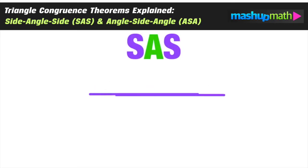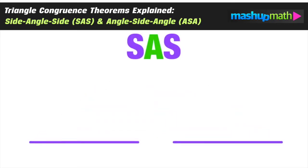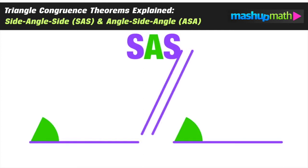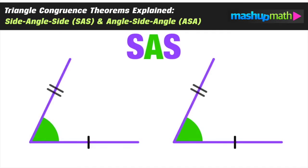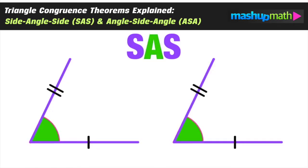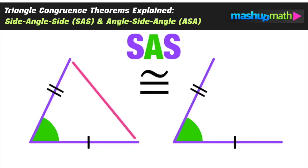The side angle side theorem states that if two triangles have a set of congruent sides along with a congruent angle and another set of congruent sides, where that angle is in between those two congruent sides, then we have enough information to say that these two triangles are congruent.